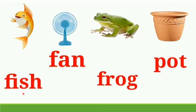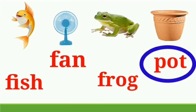The next example is: Fish, Fan, Frog, and Pot. See here, all words are starting from the letter F, except which word? Correct! Pot. So Pot is the odd man out.